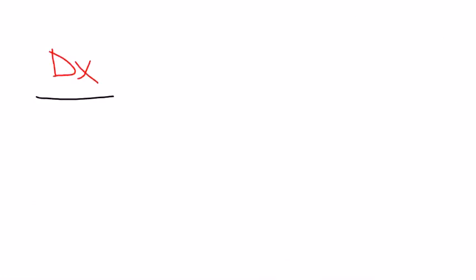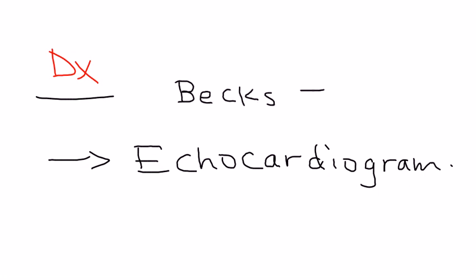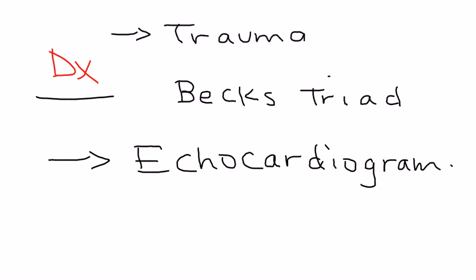Diagnosis is very straightforward. Without a doubt, if somebody has any history and presentation suspicious for cardiac tamponade, do an echocardiogram. Other than Beck's triad, the history will most likely involve some sort of trauma, because there has to be significant injury for blood to accumulate in the pericardial space — usually a stab wound of some kind.